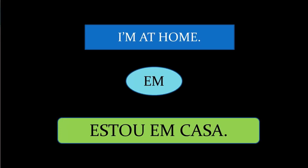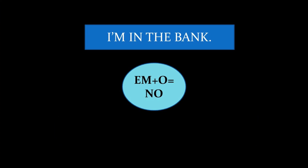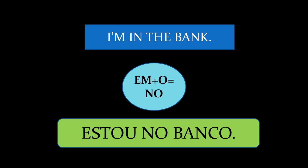Let's look at more examples. When you want to say 'I'm at home,' you start with 'estou em.' Home in Portuguese is 'casa.' 'Casa' doesn't have any article, so the preposition stays in its basic form: 'Estou em casa.' When you want to say 'I'm in the bank,' you start with 'estou em.' Bank in Portuguese is 'o banco,' so 'em' and article 'o' join together to give 'no': 'Estou no banco.'